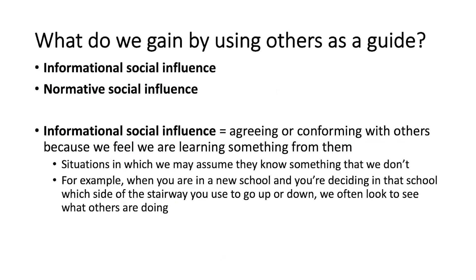There are a couple of reasons why this may occur, described as either informational social influence or normative social influence — that is, why do we use other people as a guide in social situations? When it comes to informational social influence, this refers to situations in which we agree or conform with others because we feel we are learning something from them — we assume they know something we don't. This is especially true when you go into a novel setting you've never been to before and look around to see what everyone's doing to figure out what the appropriate behavior is. We look and we learn from others — that is informational social influence.